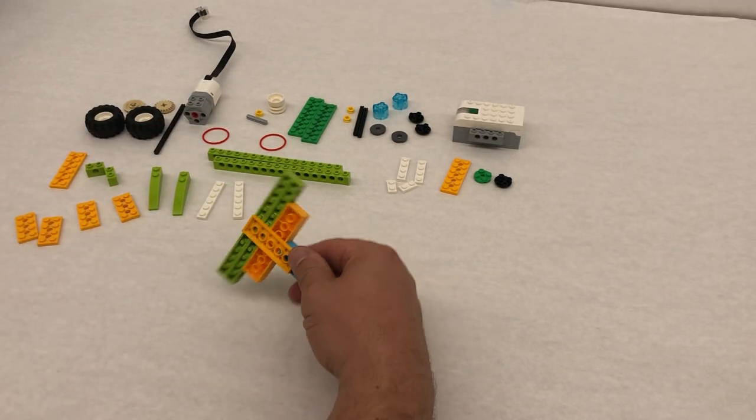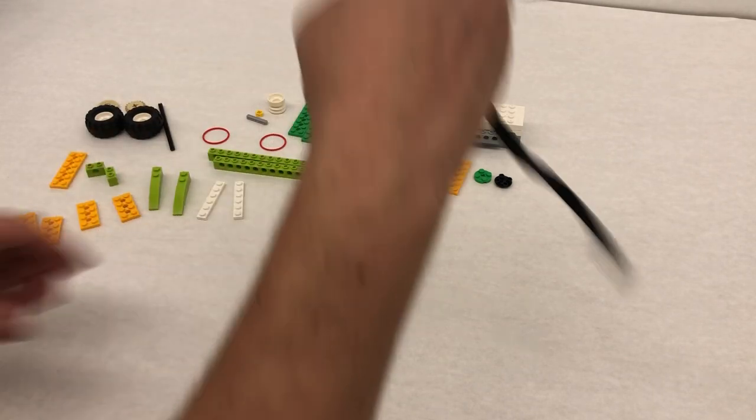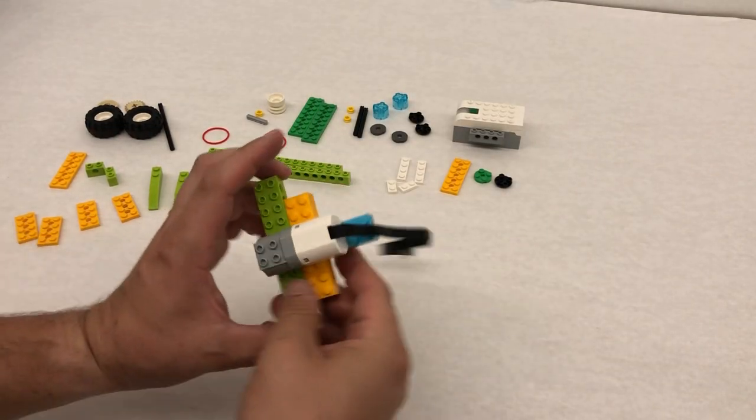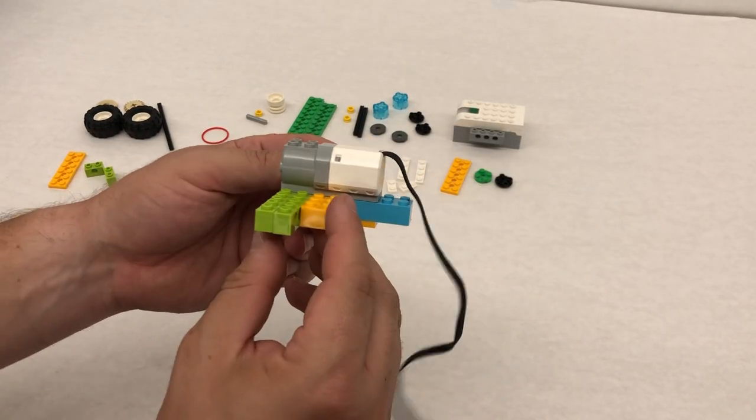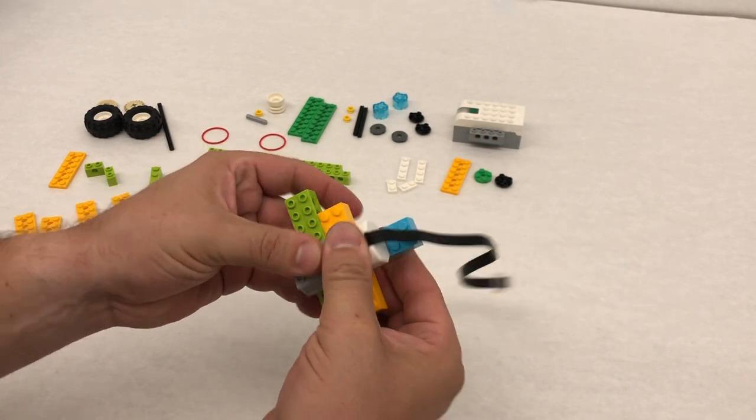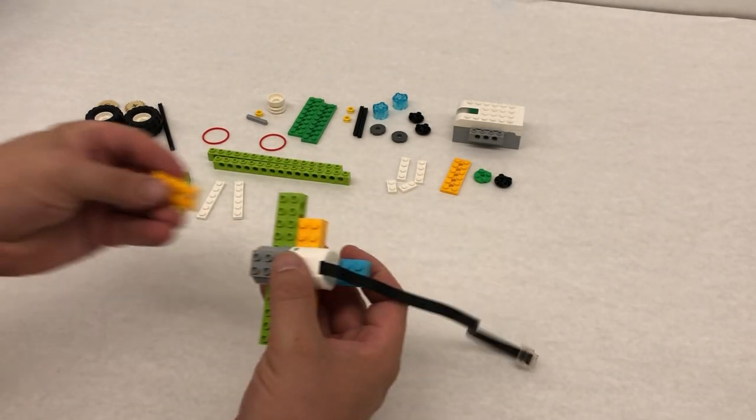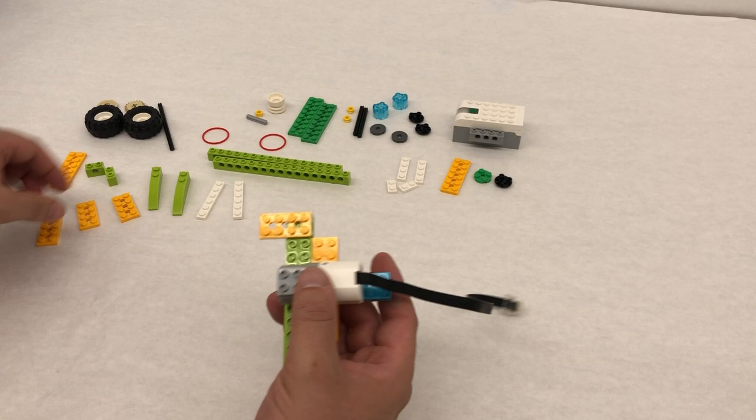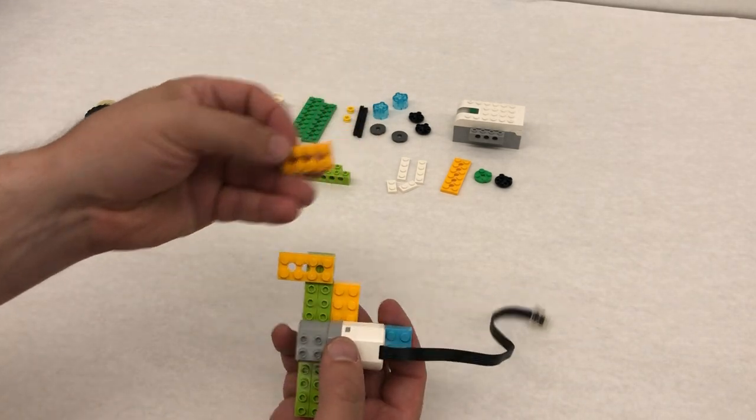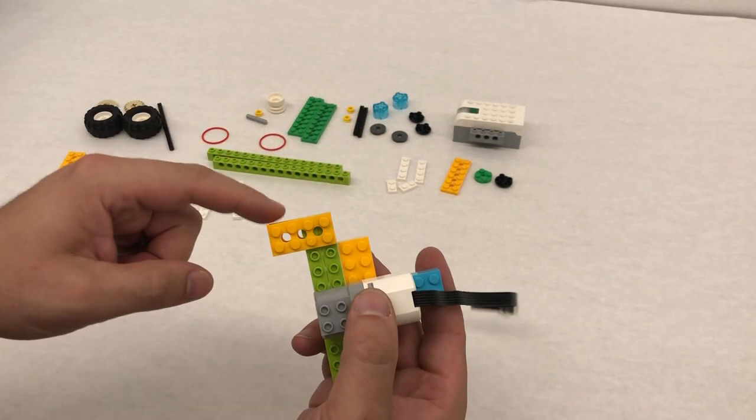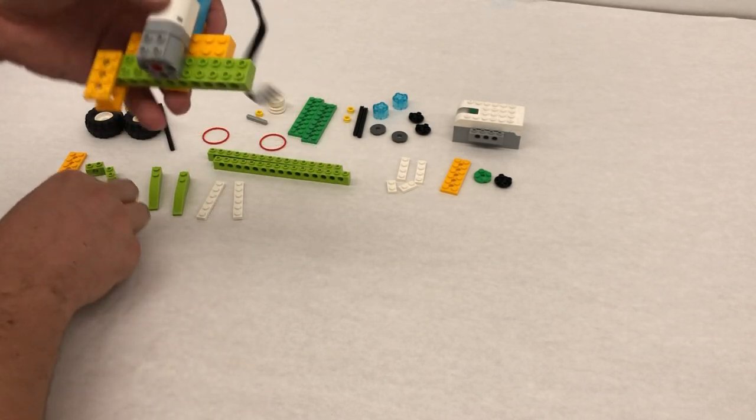All right so on top right in the middle goes my motor so it's kind of sitting here just right here in the middle. Then I'm gonna take these little flanks so these are 2x4 with the holes and we're gonna put them on either side like this.